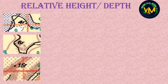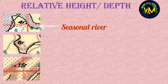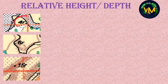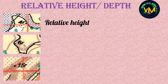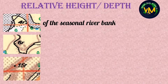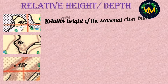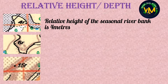Now look at the first picture. The black color dotted feature is a seasonal river. You see 4R written on the side of the river. What do you see on the sides of a river? River bank. As 4R is black in color, the first word will be relative height. Then you write the feature — seasonal river bank — and then the height. So the answer is: relative height of the seasonal river bank is 4 meters.